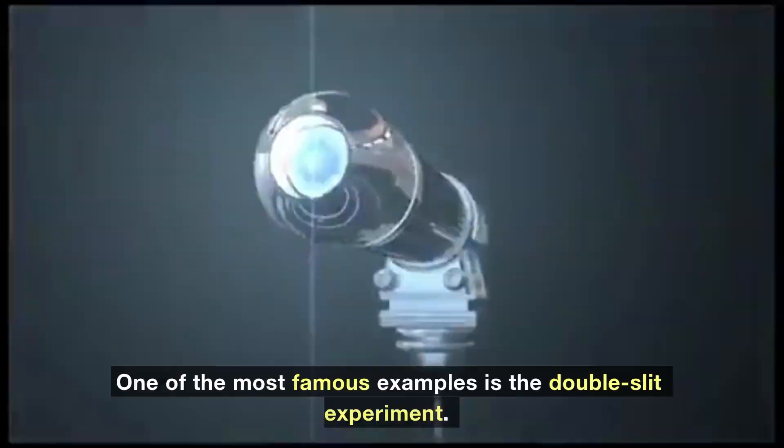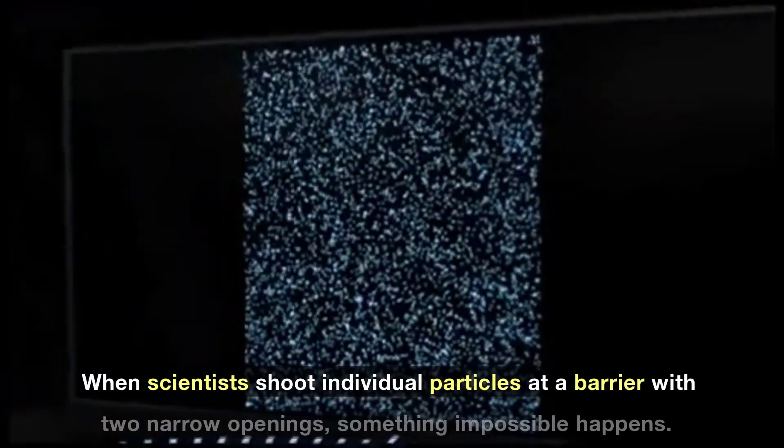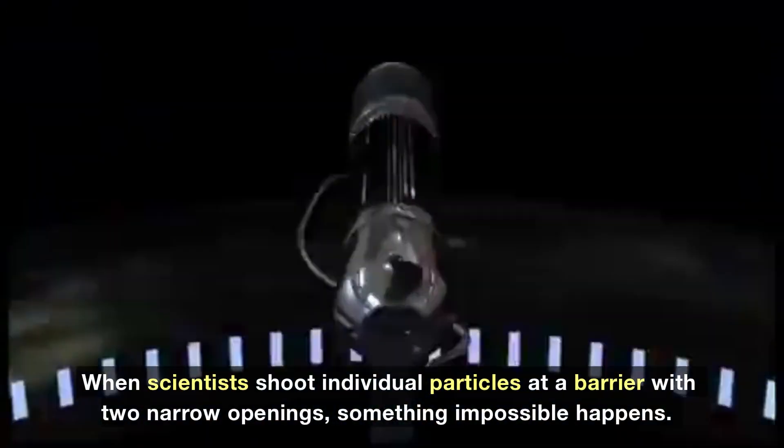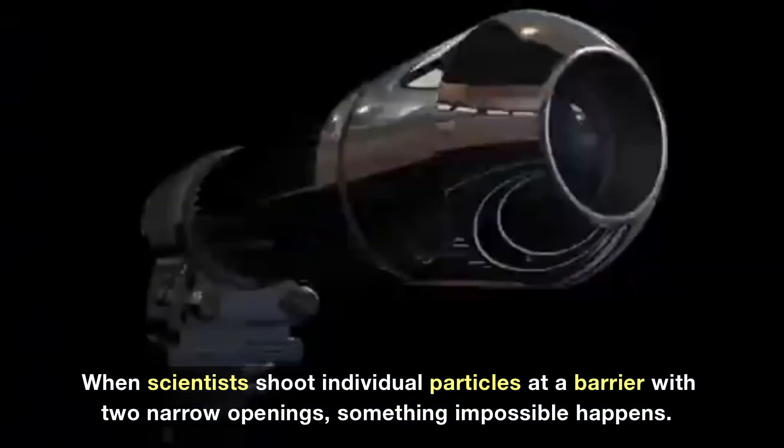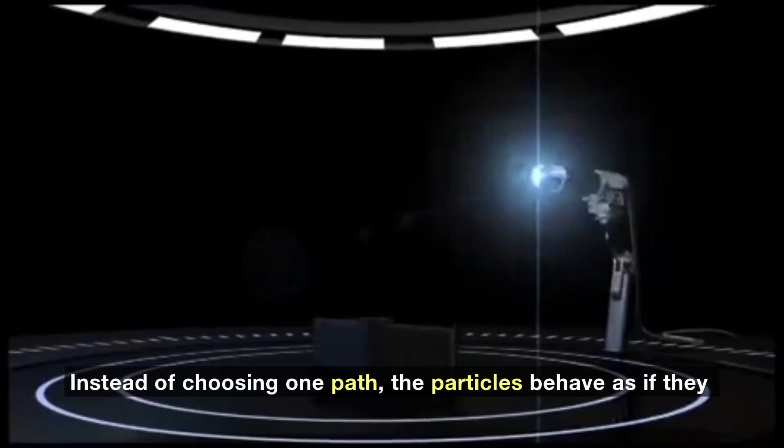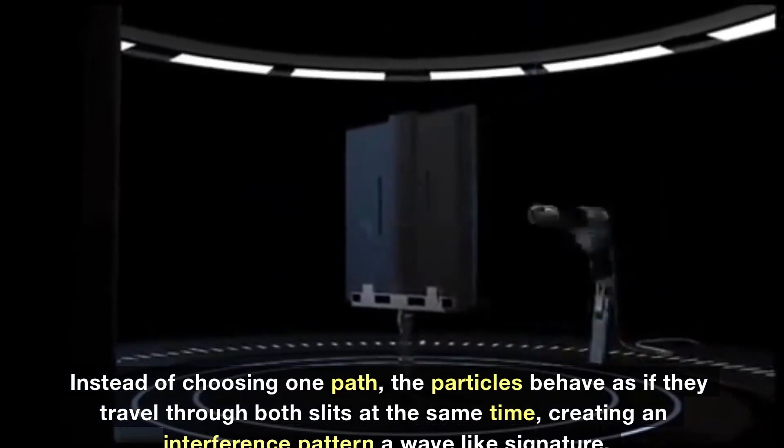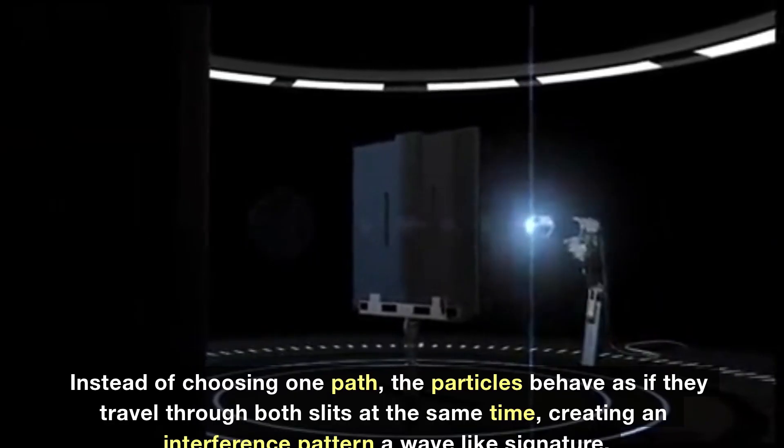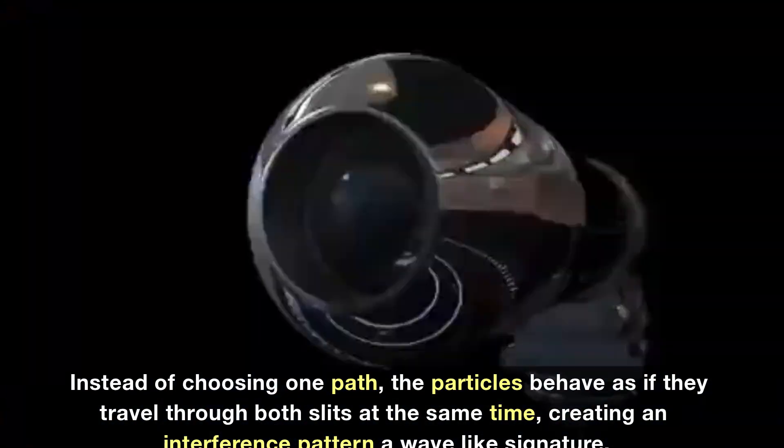One of the most famous examples is the double slit experiment. When scientists shoot individual particles at a barrier with two narrow openings, something impossible happens. Instead of choosing one path, the particles behave as if they travel through both slits at the same time, creating an interference pattern, a wave-like signature.